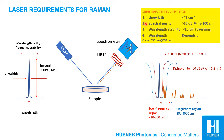Most material-characteristic Raman shifts are found in the so-called fingerprint region, around 200 to 4000 inverse centimeters from the illumination wavelength. Those shifts can rather easily be detected by blocking the laser light with a dichroic notch filter. However, in some cases there is great interest in studying much smaller Raman shifts — looking at peaks in the so-called low frequency region of less than 200 inverse centimeters.